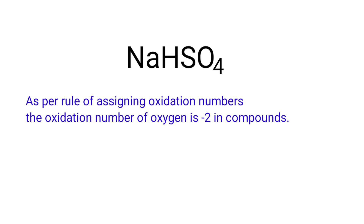As per the rule of assigning oxidation numbers, the oxidation number of oxygen is minus two in compounds. We can write the oxidation number of the element above its symbol and the total oxidation number of the atoms below its symbol.